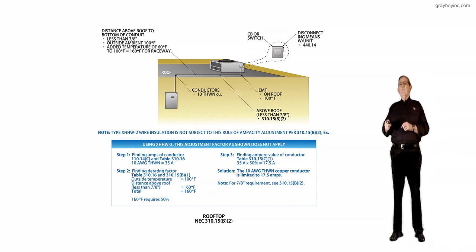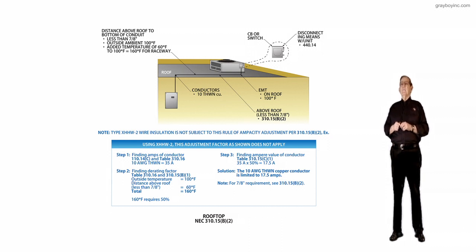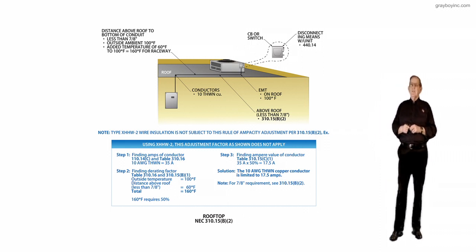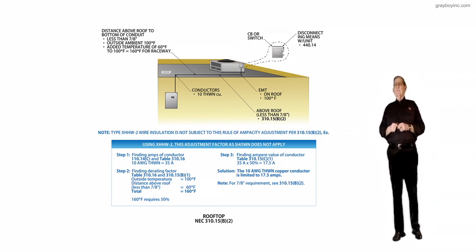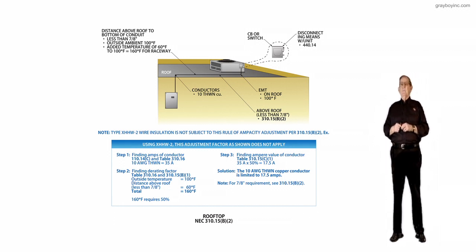Notice first of all, we have in the illustration pointing to the conduit on the roof. It's EMT, and on the roof it's 100 degrees Fahrenheit, selected from the ASHRAE handbook. That's the only place you could really get it, is from the ASHRAE handbook, as recommended by the NEC.